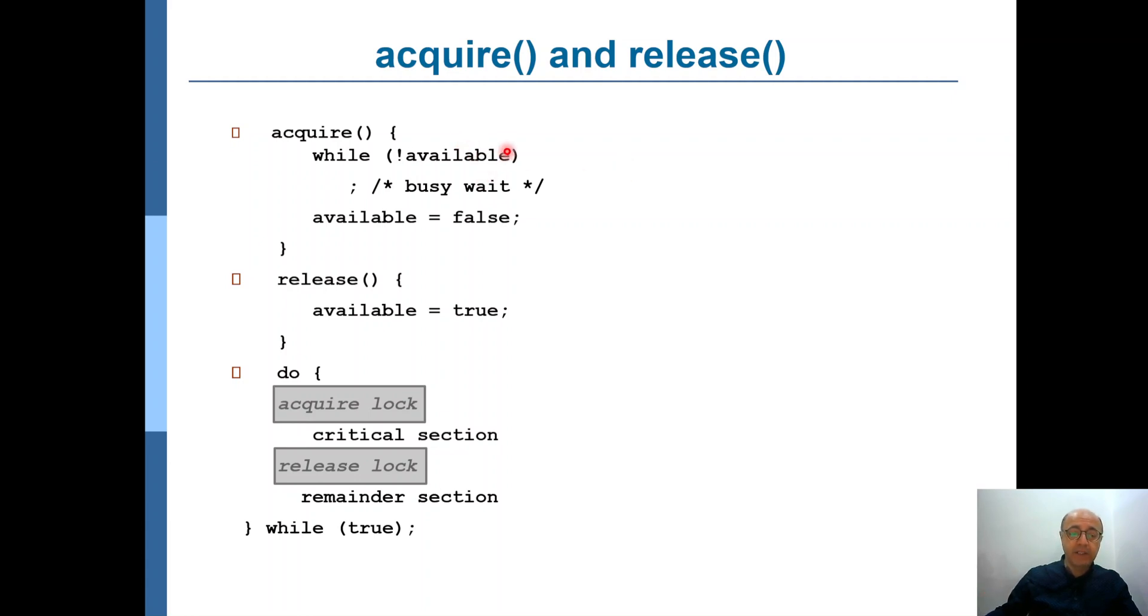When it becomes available, that means the available boolean is true, this loop will break, and the process now is able to progress.